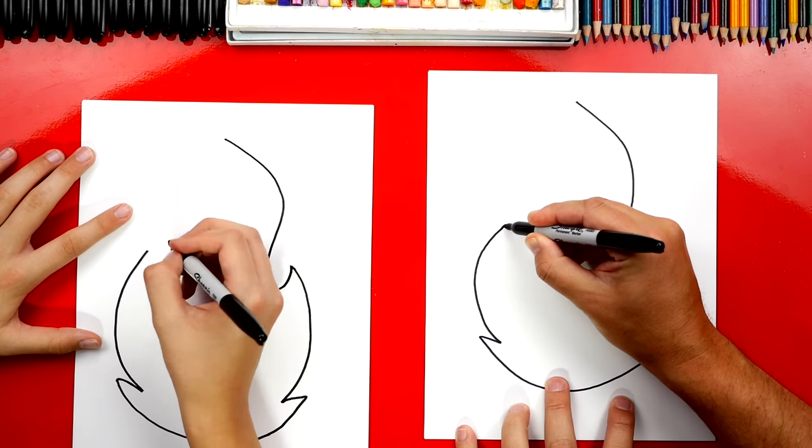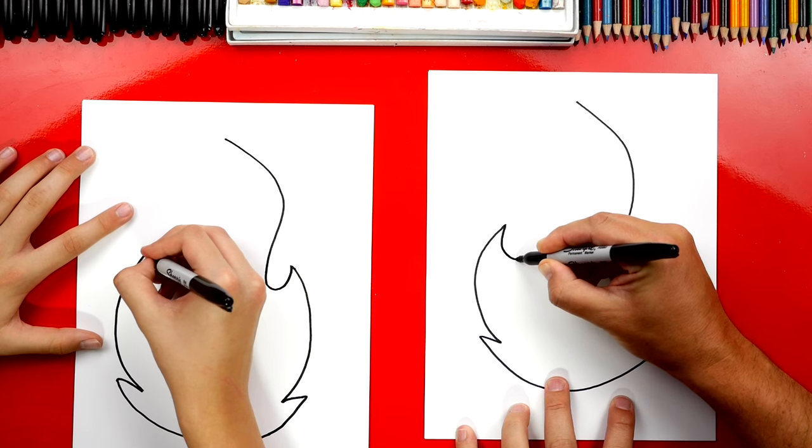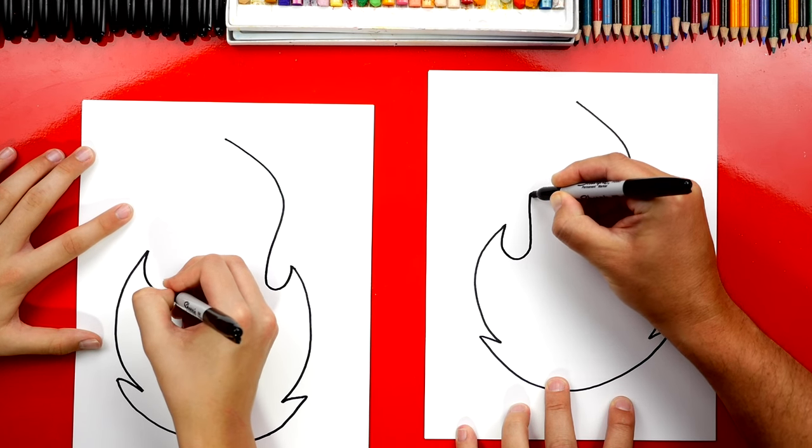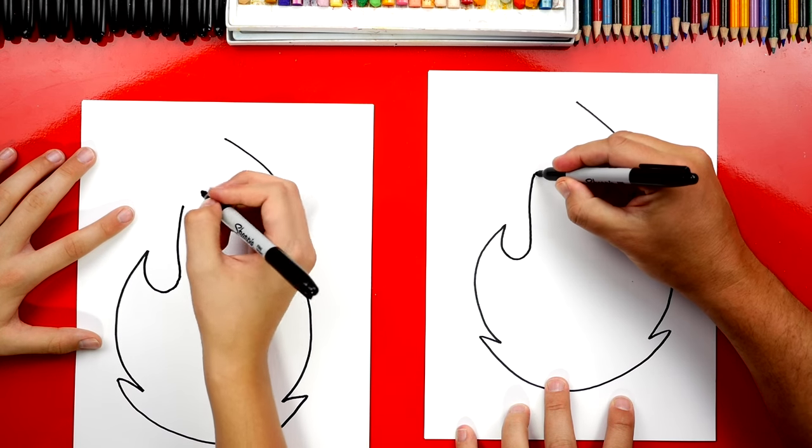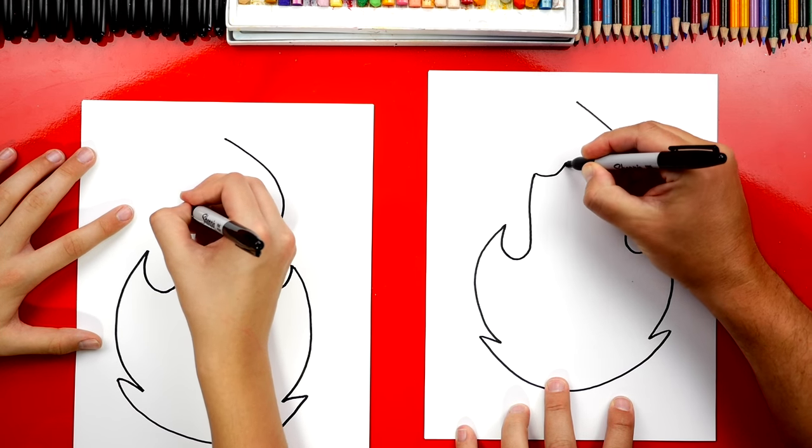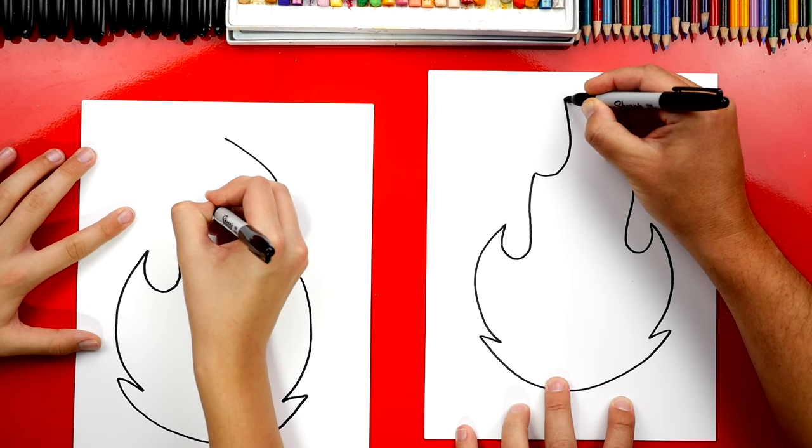Now we're going to come back over to this side. We're going to draw that same kind of U shape. We're going to curve up about halfway. And then we're going to draw the curve that comes up like this and connects.